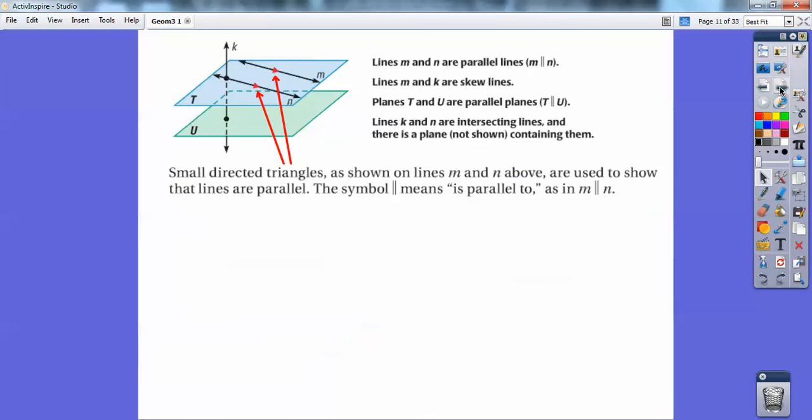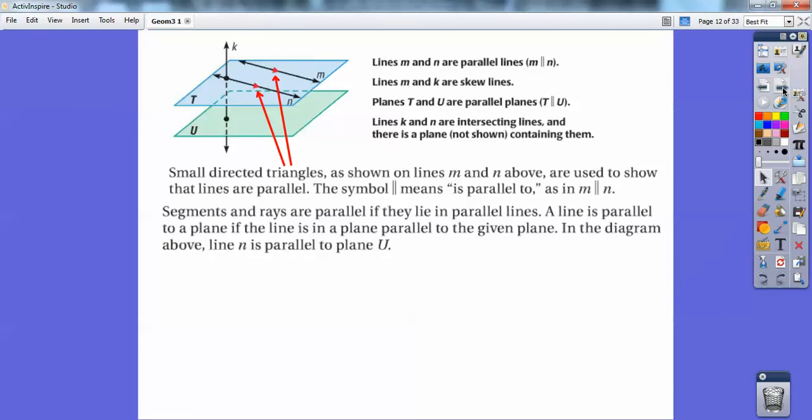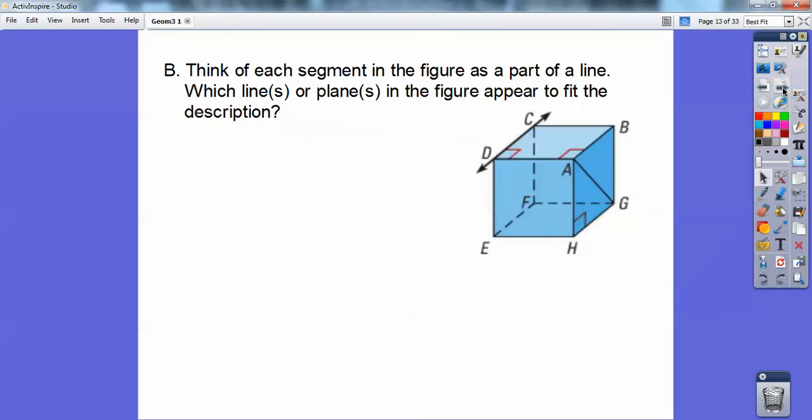So these arrows signify that lines are parallel, and the symbol with two bars next to each other, that's a shorthand symbol for parallel. Remember, upside down capital T is for perpendicular. Segments could be parallel as long as they have the arrows. Rays could be parallel as long as they have the arrows.